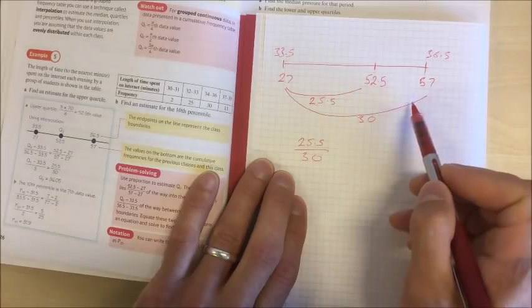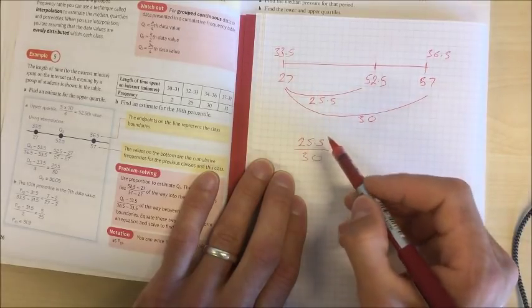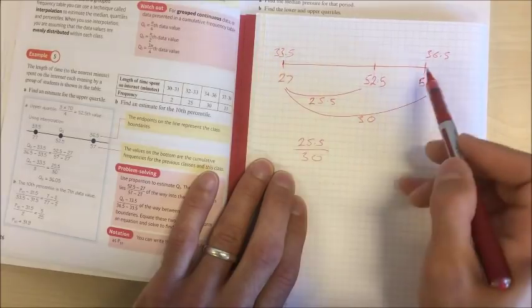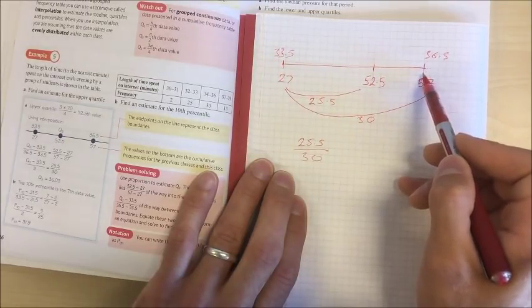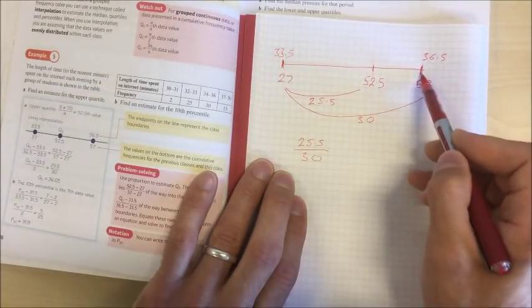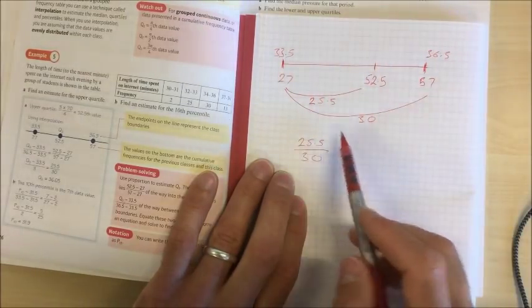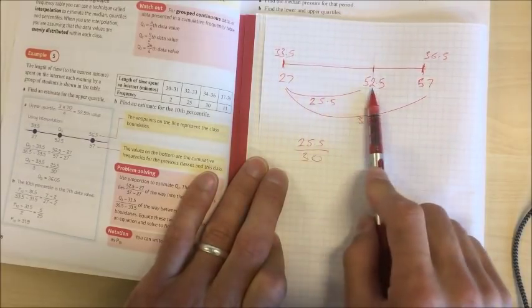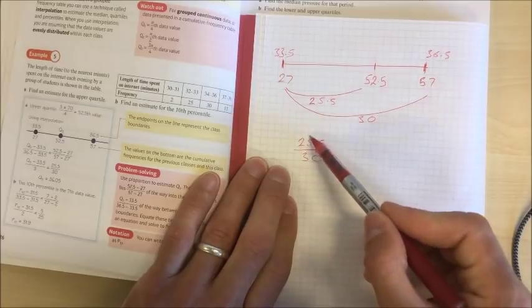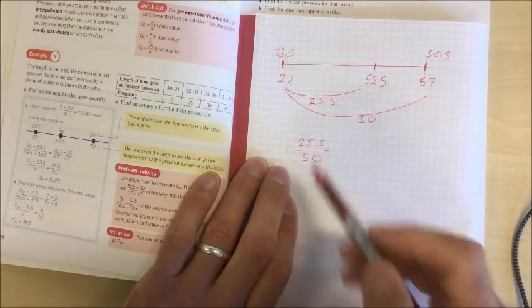So what fraction of the distance have we gone along here? We've gone 25.5 out of 30. That's what fraction of the distance we've gone along the bottom of the line. Now if the data is evenly spaced out we're going to have gone the same distance from 33.5 up to 36.5. If the bottom of this class is 33.5 the top is 36.5, if we make the assumption the data is evenly spaced out and we go 25 and a half pieces of data out of 30 pieces of data, we're going to go that fraction 25 and a half out of 30.